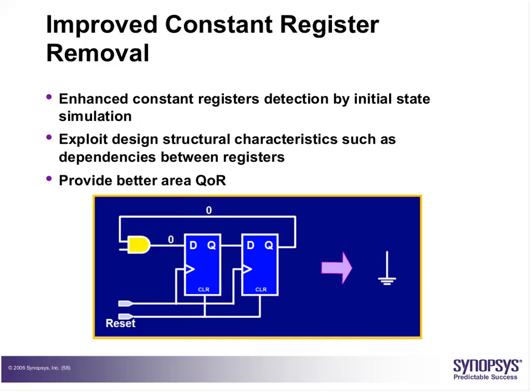Compile ultra has enhanced constant register removal, where constant registers are detected by initial state simulation. For example, if the data pin of a flip-flop is tied to 0, DC will remove that register by default because it has no functionality other than outputting constant 0, saving area.